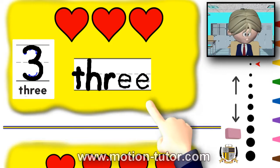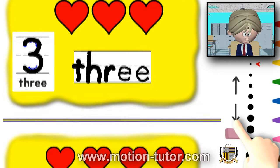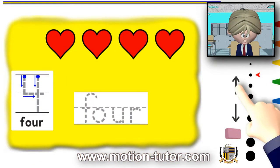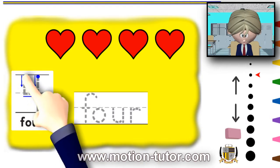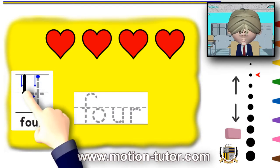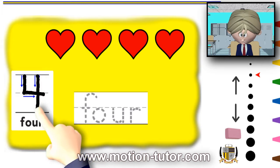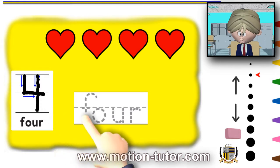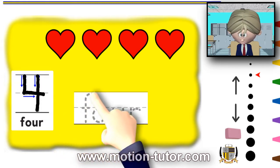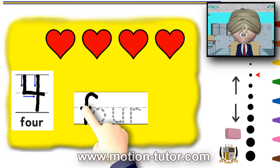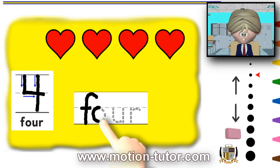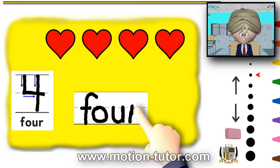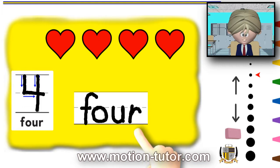And now for the number four. Remember — you go down and over and cross. So that's number four, that's how you write the number four. And now let's write the letters: F, O, U, R. The number four.